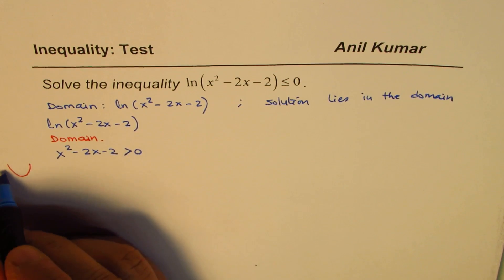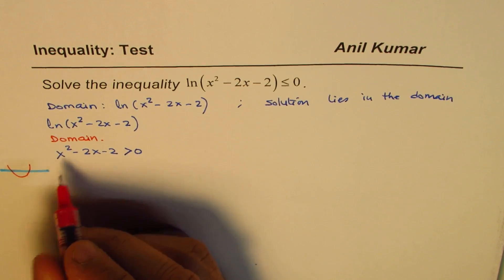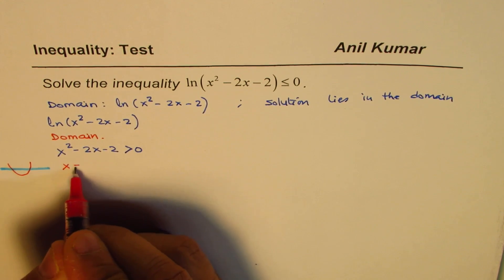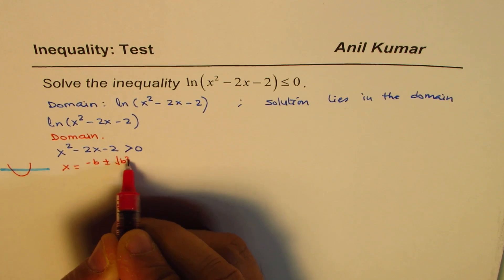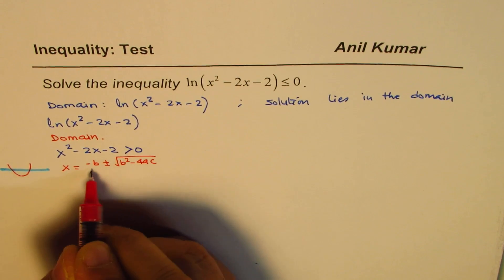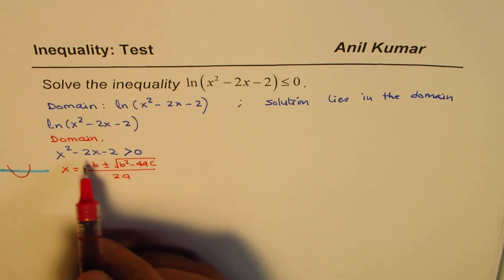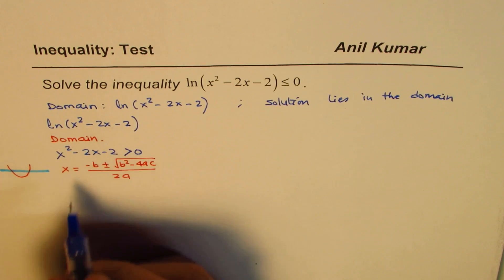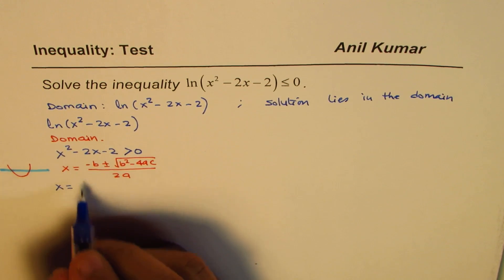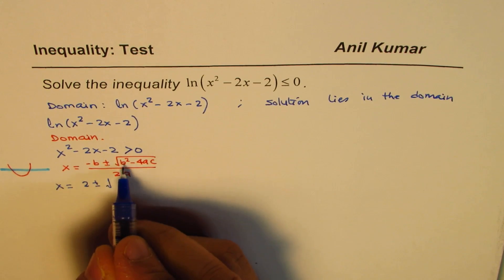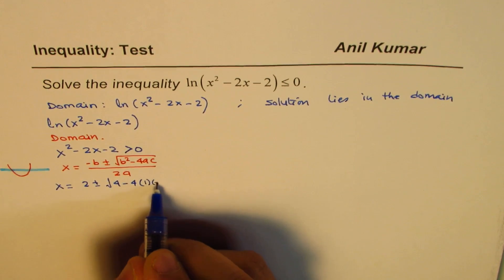We need to find where the zeros are on the x-axis, which we can find using the quadratic formula: x = (-b ± √(b² - 4ac)) / 2a. So here x equals — for the zeros — minus of minus 2, that is 2, plus or minus: minus 2 squared is 4, minus 4 times a (which is 1) times c (which is minus 2), divided by 2a which is 2.